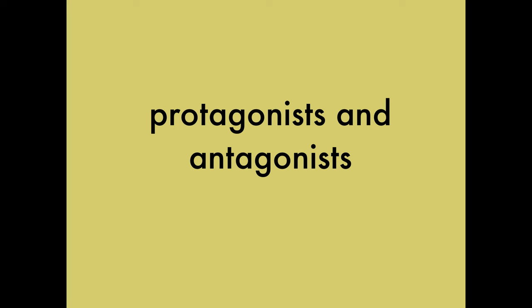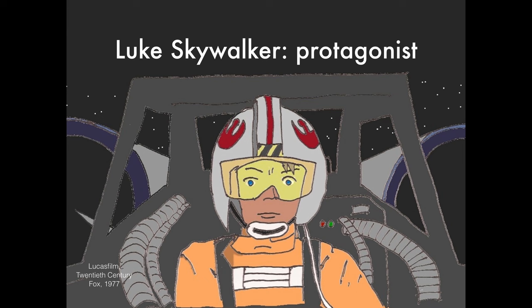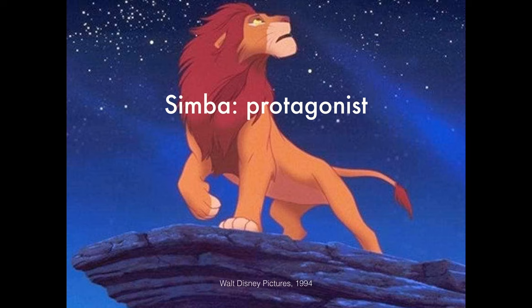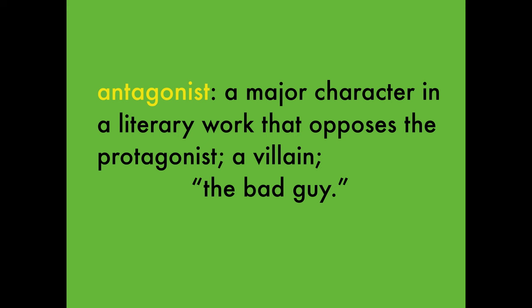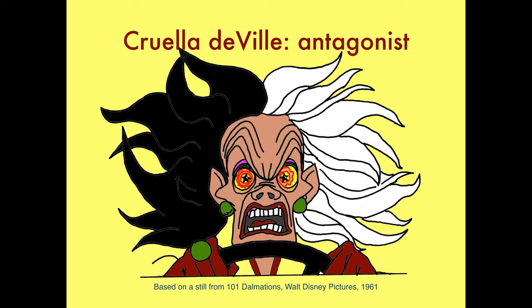We'll talk about these terms in this video. First up: protagonist. You probably know what a main character is — he or she is the character the story is about and whom we are most interested in seeing succeed. Some main characters, but not all, are called protagonists. The protagonist is the good guy. Luke Skywalker in Star Wars is a protagonist. Simba is a protagonist. Iron Man is a protagonist. The opposite of the protagonist is the antagonist — the bad guy, what we might call the villain. Darth Vader is an antagonist. Cruella de Vil in 101 Dalmatians is definitely an antagonist.